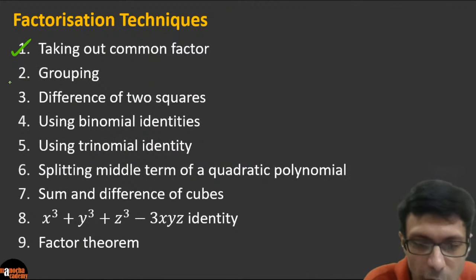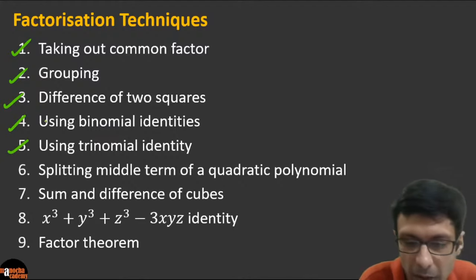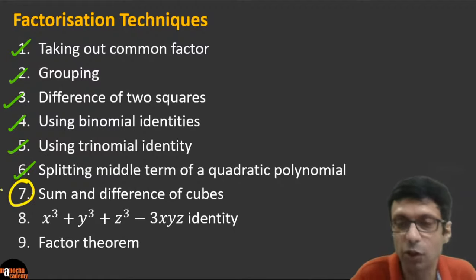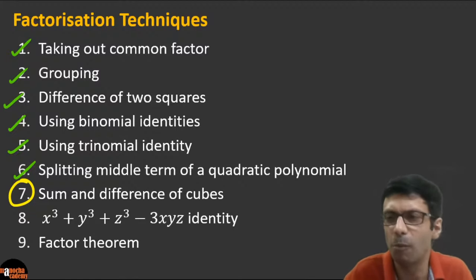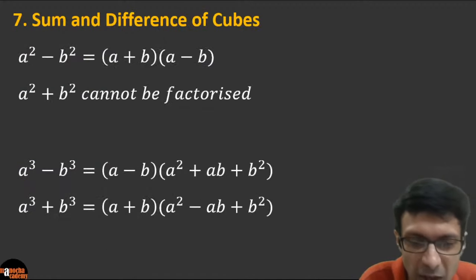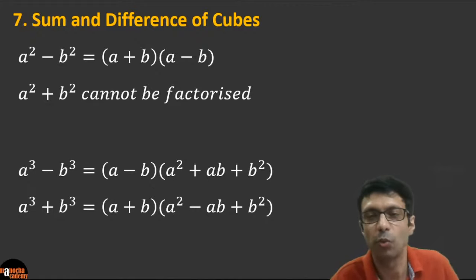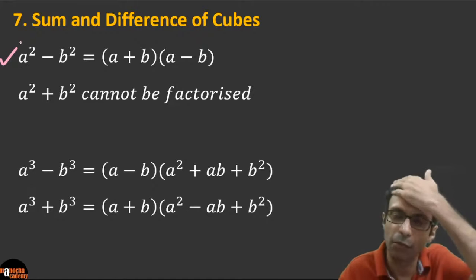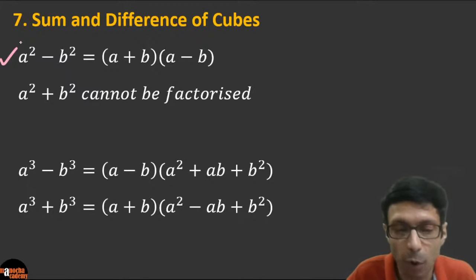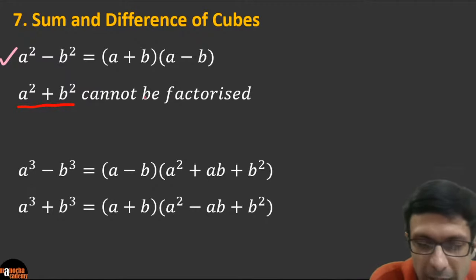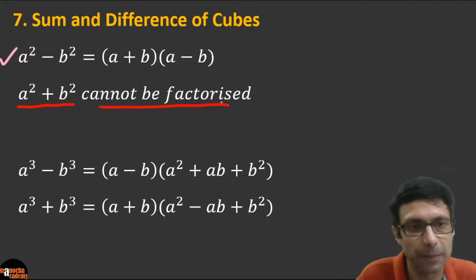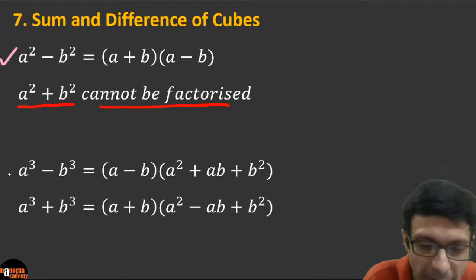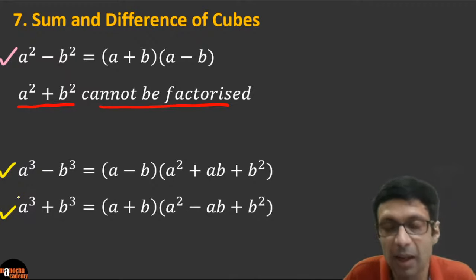We've now covered: common factor, grouping, difference of two squares, binomial, trinomial, and splitting the middle term. Let's look at technique 7: sum and difference of cubes. Note: a² − b² can be factorized, but a² + b² cannot. However, cubes have formulas for both: a³ − b³ = (a−b)(a² + ab + b²), and a³ + b³ = (a+b)(a² − ab + b²). These formulas are closely related — only the signs differ.